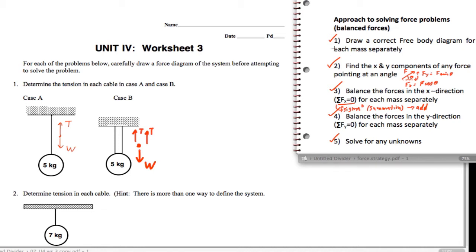So we've just done step one. We have drawn a correct free body diagram for each mass separately. Now it says find the x and y components of any force pointing at an angle. And when we look, we see here that there's no force in this problem pointing at an angle. So that means step two is essentially done.